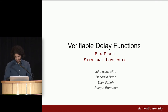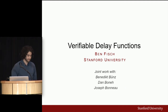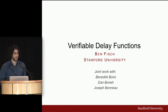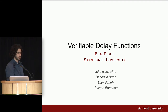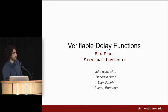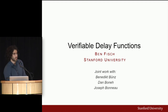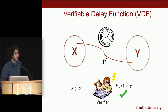This talk is on verifiable delay functions, which is quite relevant to the previous talk on proof of space, because there's a nice idea of combining proofs of space with verifiable delay functions to have a blockchain consensus protocol. This is joint work with co-authors Benedict, Dan Bonnet at Stanford, and Joseph Bonneau, a professor at NYU.